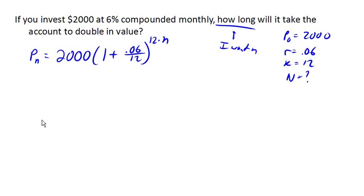And so to answer this question, I'm going to set the amount that I end up with equal to 4,000. Oops, I got one too few zeros there. There we are. And now I can start solving for n.